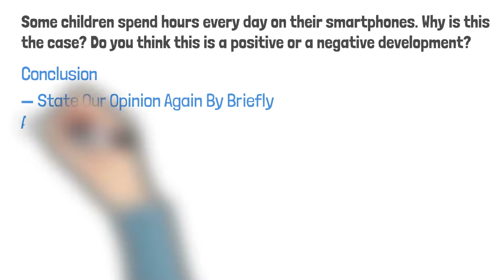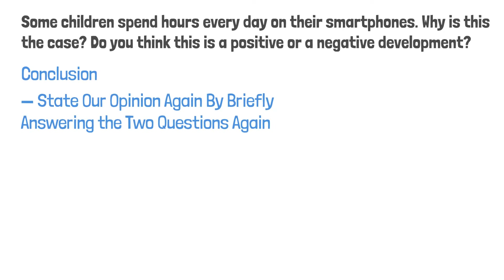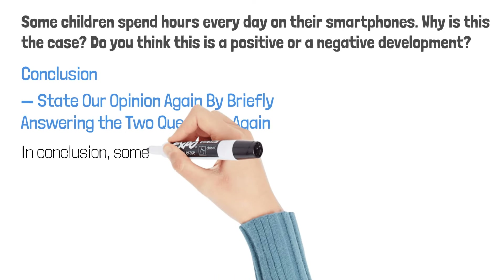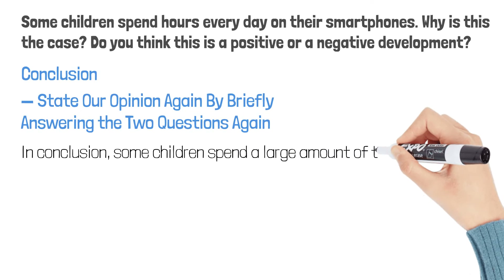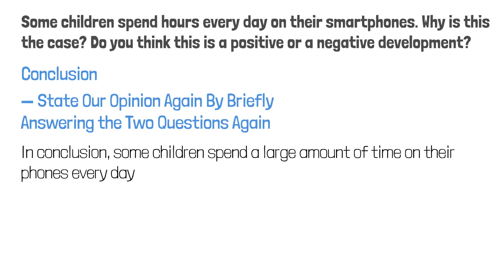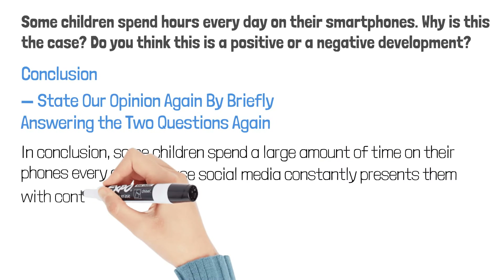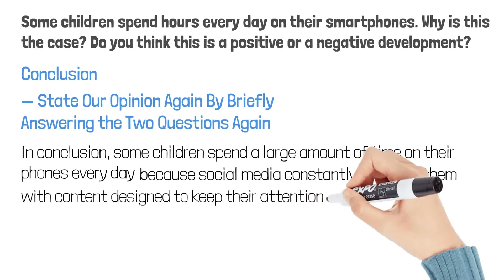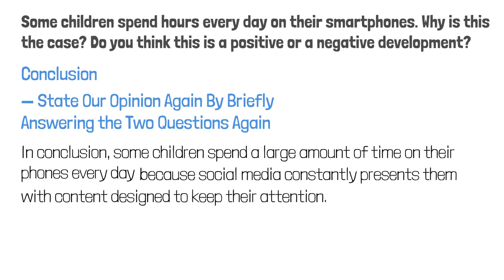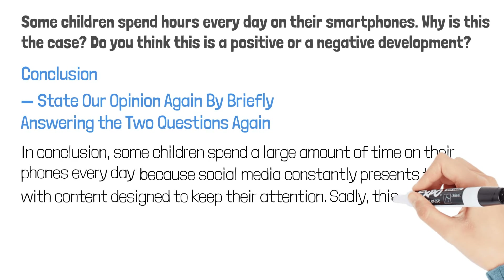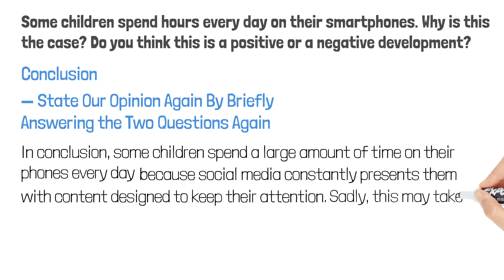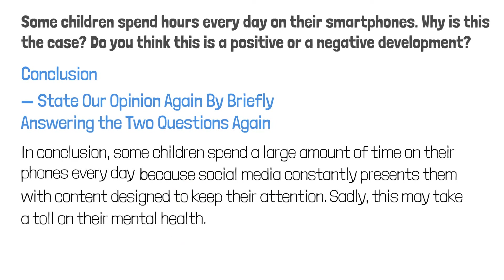The conclusion paragraph is basically the same — we state our opinion by briefly answering the two questions. 'In conclusion, some children spend a large amount of time on their phones every day because social media constantly presents them with content designed to keep their attention.' This is answering the first question. 'Sadly, this may take a toll on their mental health.' This is answering the second question. To take a toll on something means to have a bad effect on something.